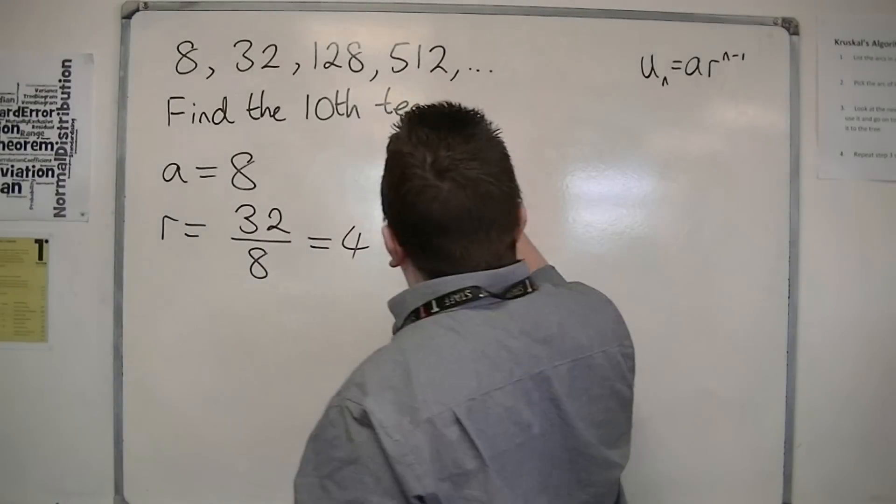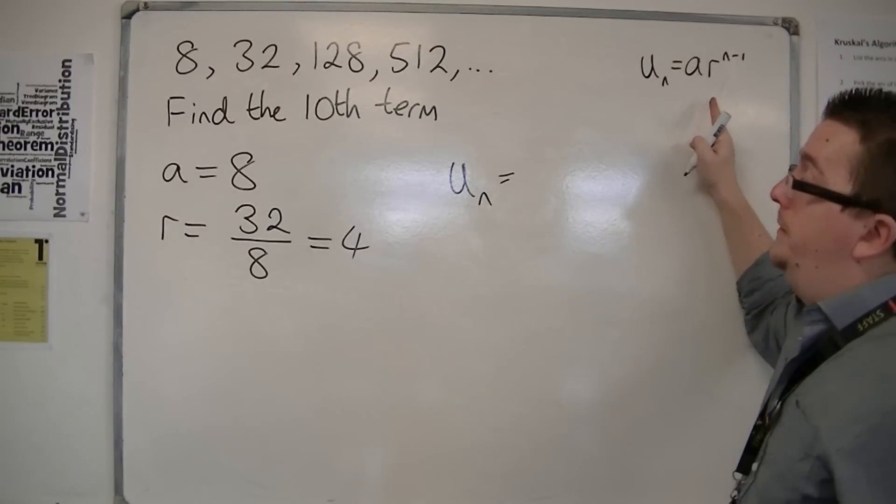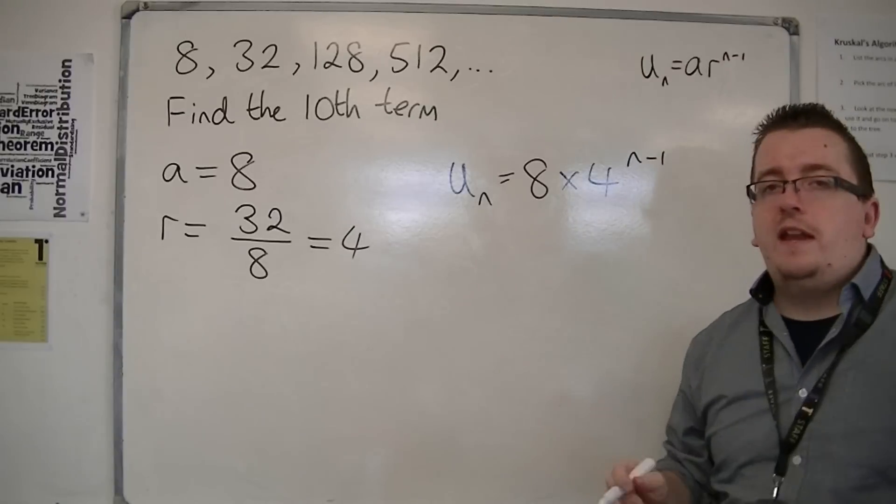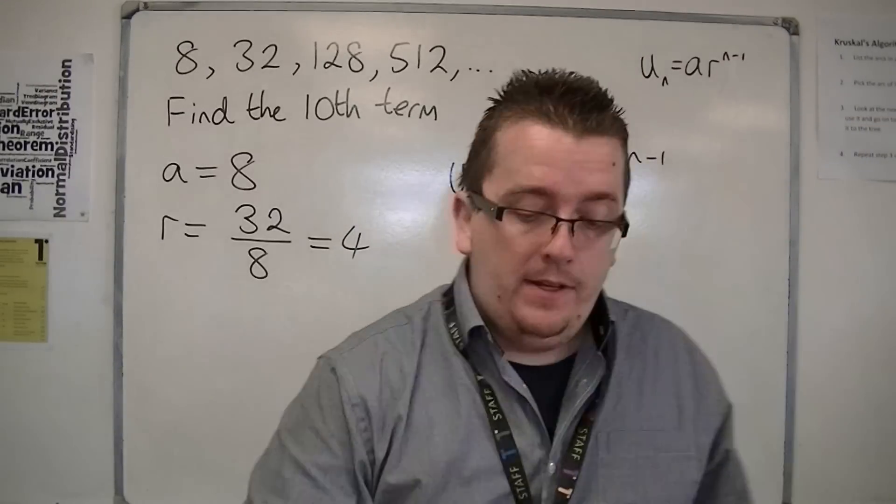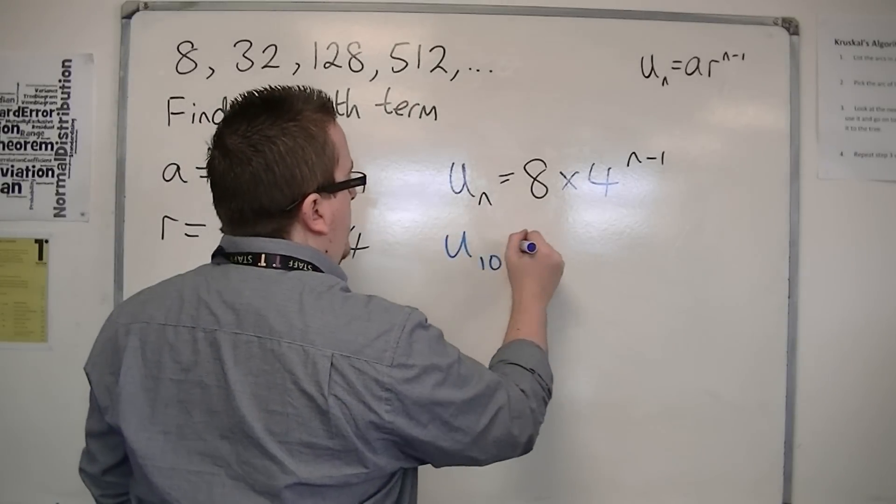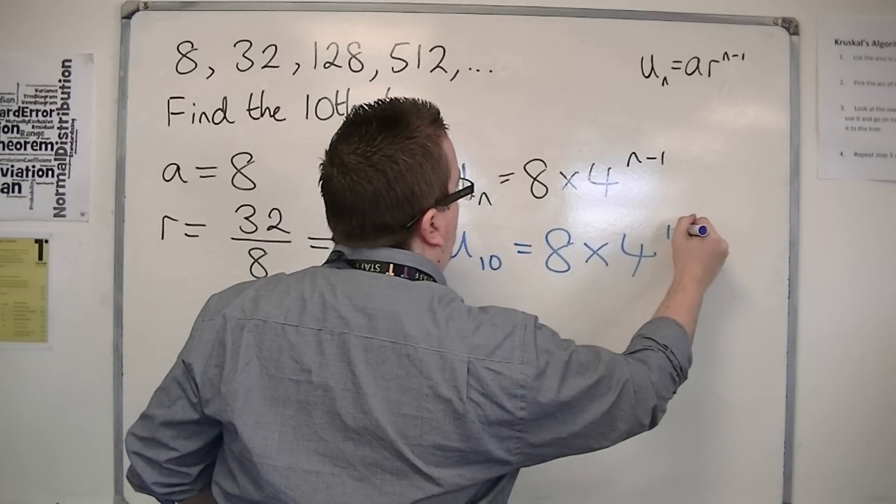So, that means that the nth term for the sequence, using this formula, is 8 times 4 to the n minus 1. That's the nth term for this sequence. So, if I want to find the 10th term, u10 is 8 times 4 to the 10 minus 1.